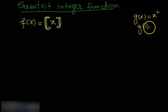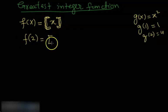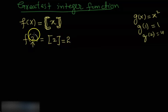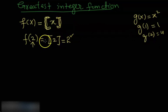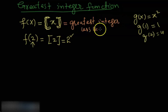Whenever you insert an integer input, it will give you an integer. The definition is: f(x) = ⟦x⟧ gives you the greatest integer less than or equal to x.